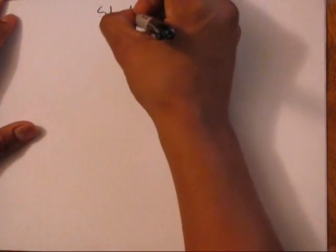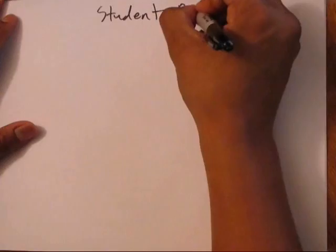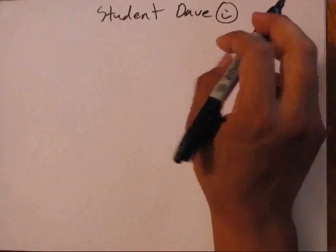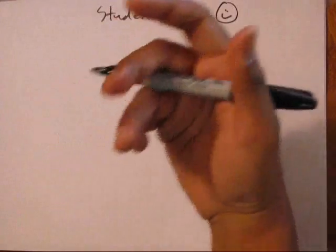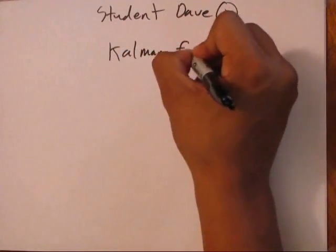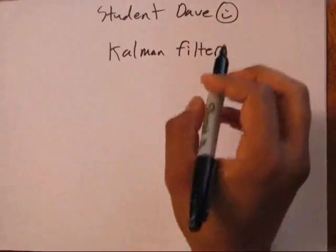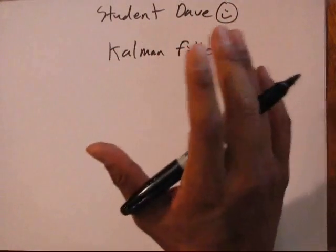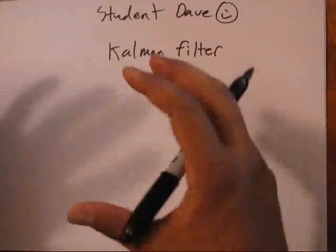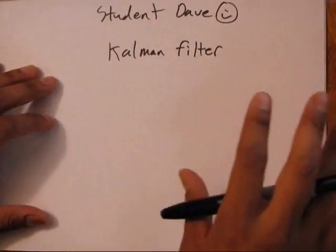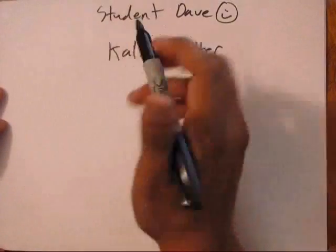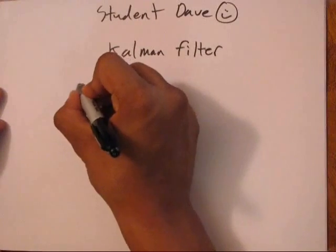Okay, hello, welcome to the next installment of Student Dave. So we're going to go and continue our saga with the Kalman filter. Before we were talking about the theory behind it and some of the general ideas of how it works, and now we're going to get into a lot more of the specifics and then do an example in MATLAB. We're going to continue our story with the Beijing Ninja, if you recall.